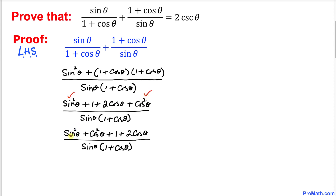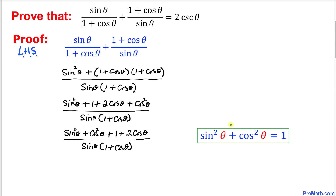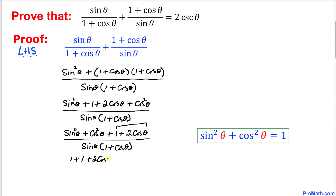In this next step I've rearranged, putting sine squared theta and cosine squared theta together. Recalling the fundamental Pythagorean identity — sine squared theta plus cosine squared theta equals 1 — we replace that part with 1, leaving us with 1 plus 1 plus 2 cosine of theta, all divided by sine of theta times 1 plus cosine of theta.